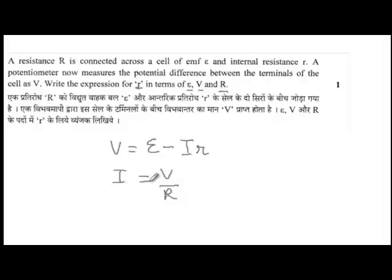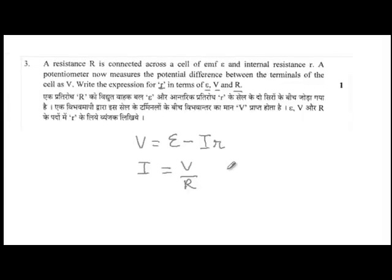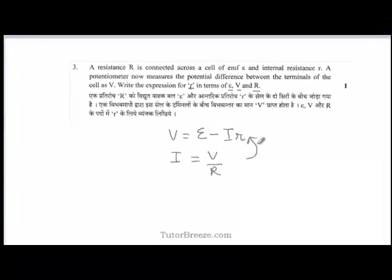So, if you put I in terms of V and R and substitute this into the first equation, you will get the value of V as E minus V over R times r and then you can write the expression for r over here.